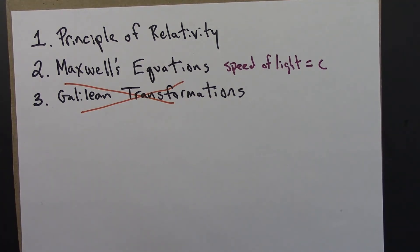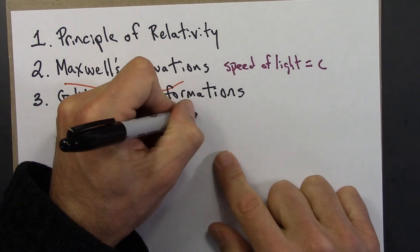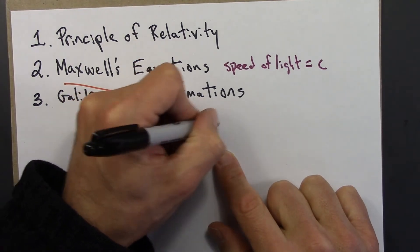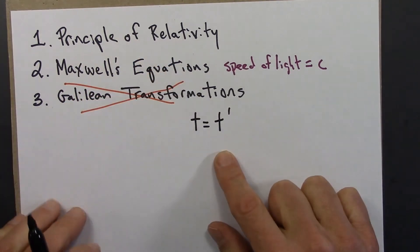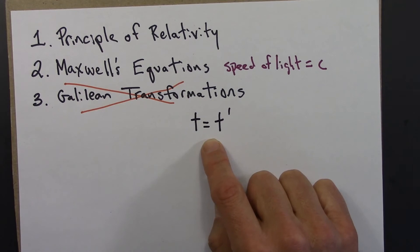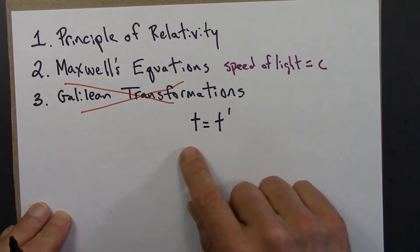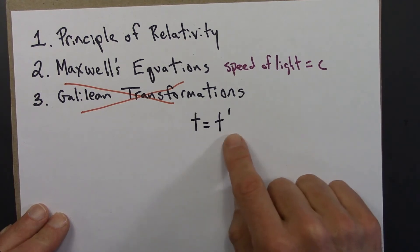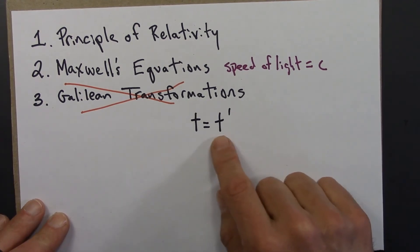Well, the thing that's wrong is this assumption, that t equals t prime. According to Galileo and to Newton, time is time. You would never disagree with time just because you're moving. And Einstein says, maybe we're going to have to revisit this. This is the assumption that we're going to have to change.